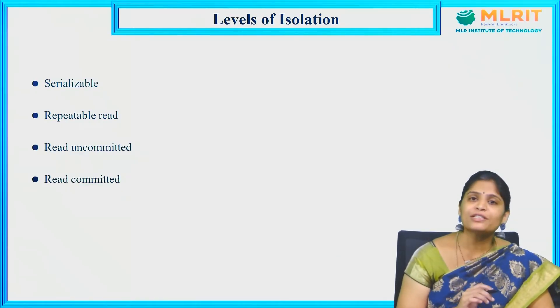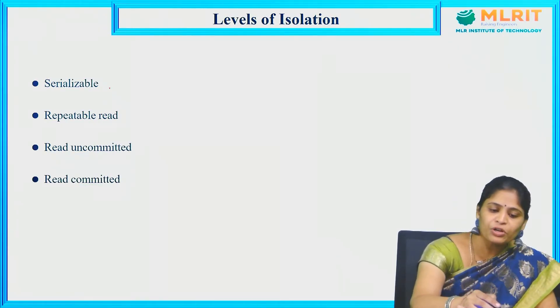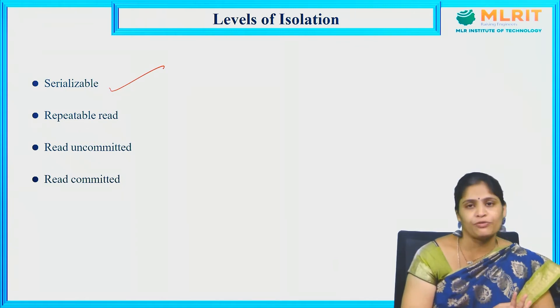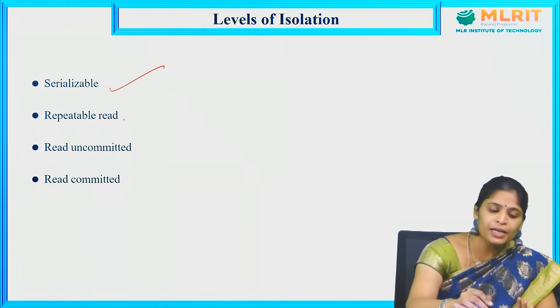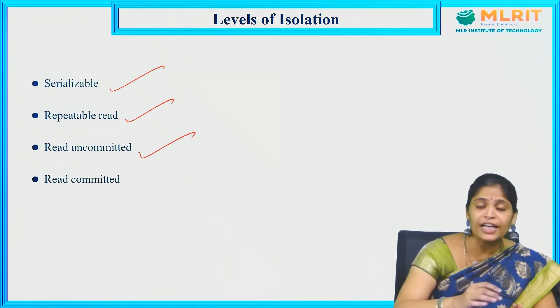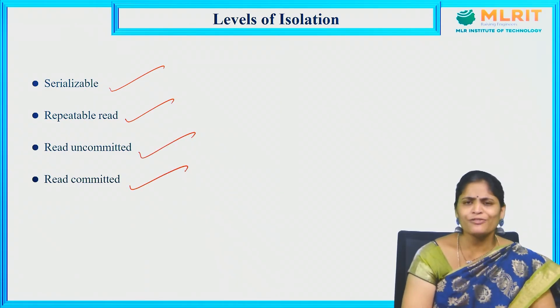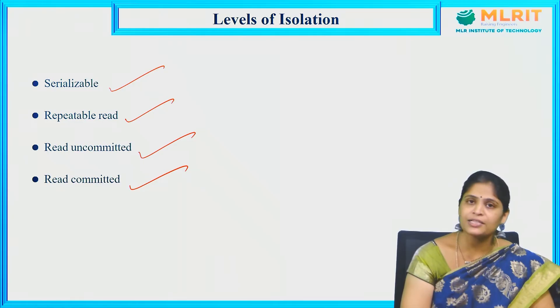Next, what are the levels of isolation? There are four types of levels: Serializable, Repeatable Read, Read Uncommitted, and Read Committed. These are the four important levels in isolation.